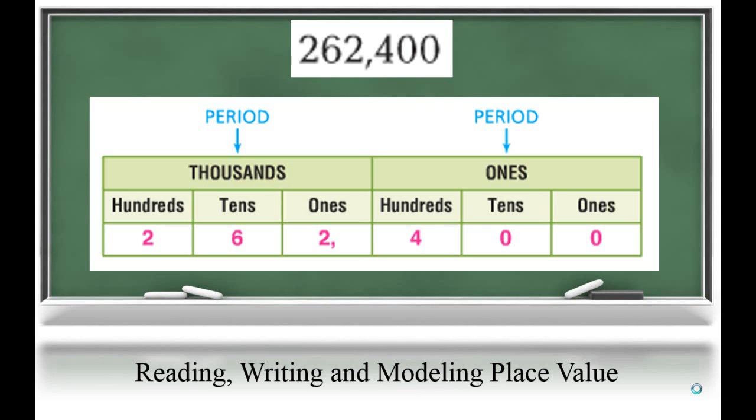So let's look at our number and see if we can figure some of this out. In our number 262,400, we have 400. That's equal to 40 tens or 400 ones. We also have 200,000s and 6 ten thousands. We could also say that as 26 ten thousands.